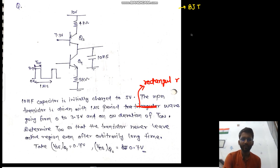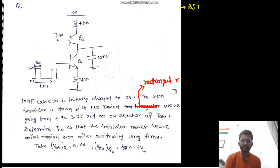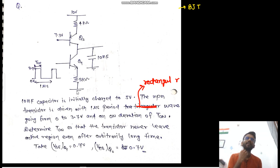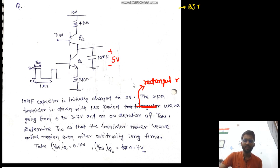Hello everyone. So that's a very good question on BGT V-icing. In this question, we have been given a triangular wave input. This is the input and this is the capacitor which is charged to 5V. Initially at t equals to 0, it is charged to 5V. But now you have to determine the value of T1 so that none of the transistors leave the active region.